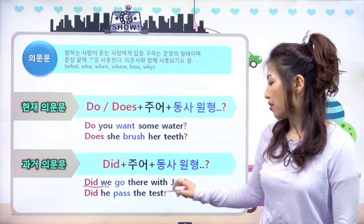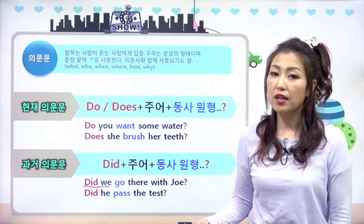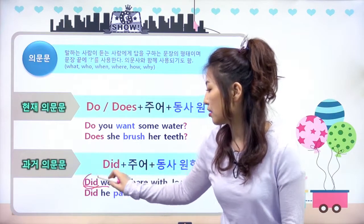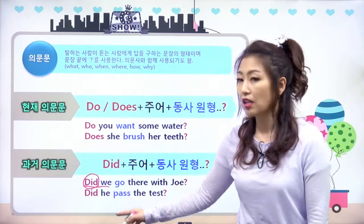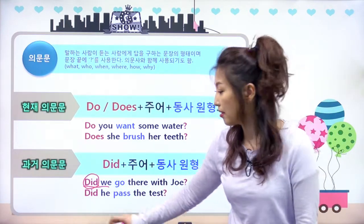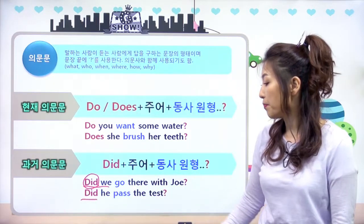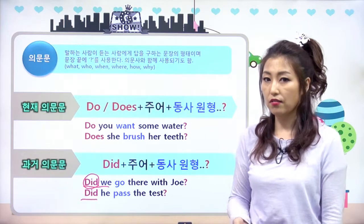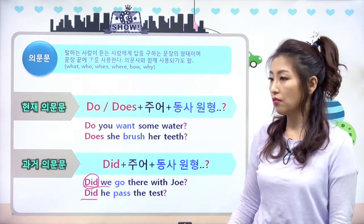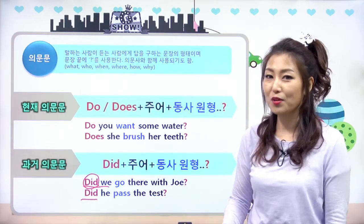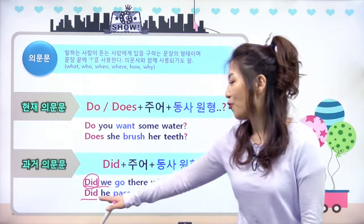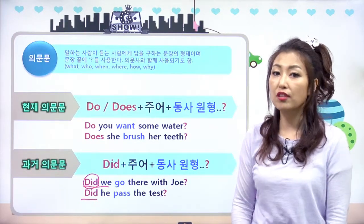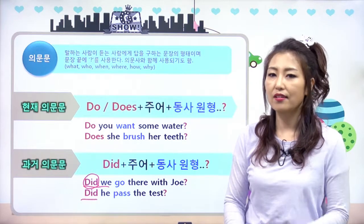'Did we go there with you?' 우리 거기에 너랑 같이 갔었어? 이런 얘기죠. did는 3인칭 단수 상관없어요. 'Did he pass the test?' 그는 그 시험을 통과했어? 과거는 did로 다 통일, 주어에 상관없이 다 did를 쓰면 돼요.